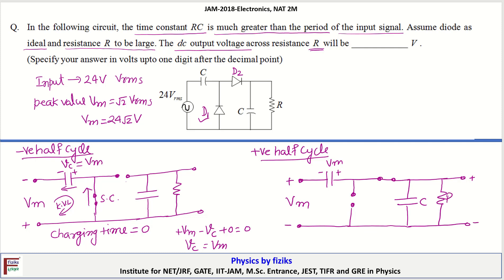Now this time capacitor voltage will try to discharge through R. So discharging time is RC and RC is very large as compared to the half period of the input. So during this time interval capacitor will hold the voltage.